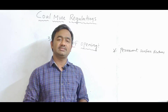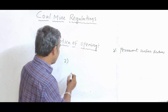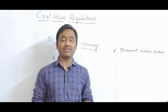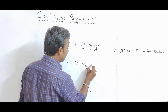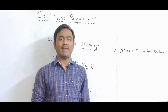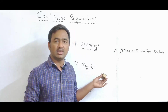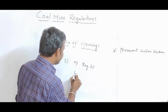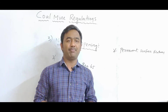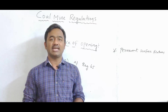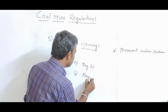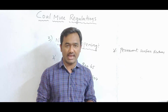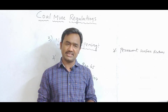The second point: the notice referred to in sub-regulation 1 shall be accompanied by a copy of the surface plan prepared under Class A of sub-regulation 1 of Regulation 65. A copy of the surface plan must be submitted to the Regional Inspector and Chief Inspector. Not only the surface plan, but also a copy of the Safety Management Plan prepared under Regulation 104 must also be submitted.